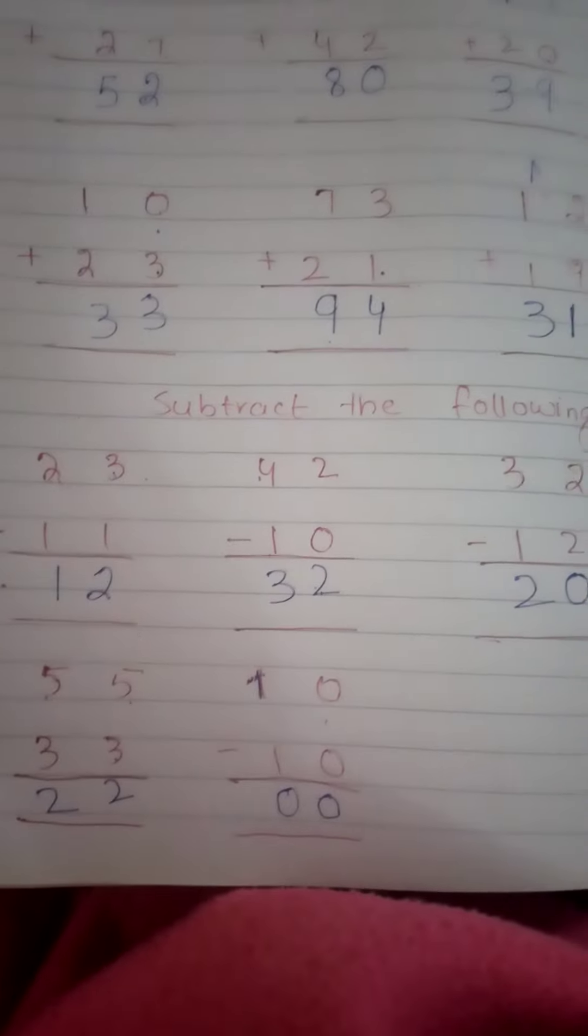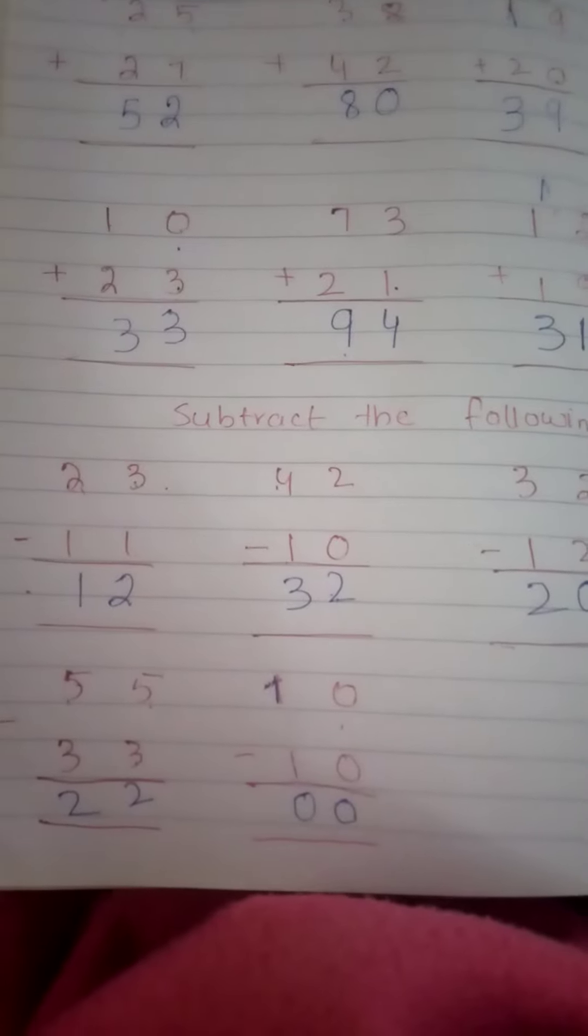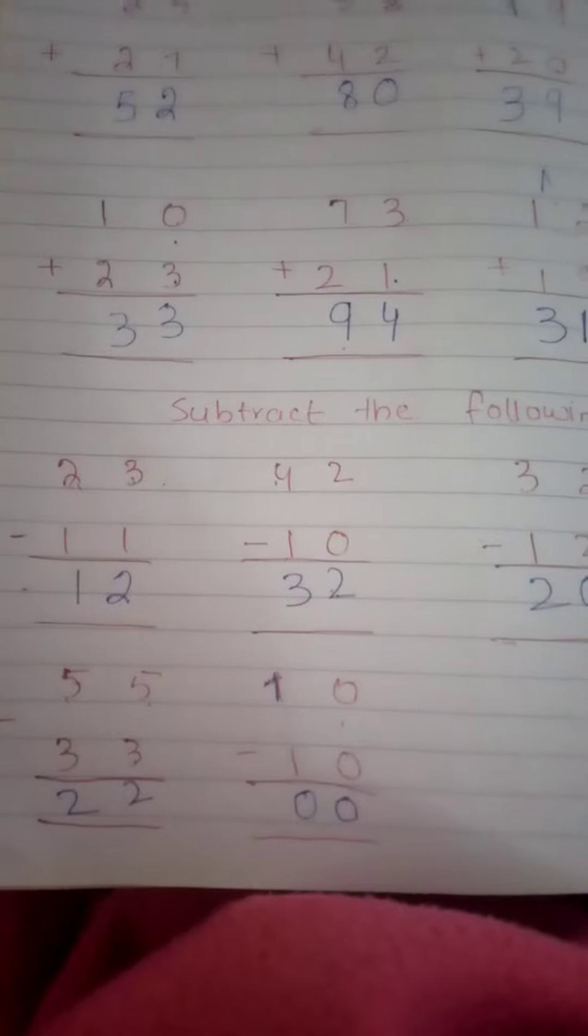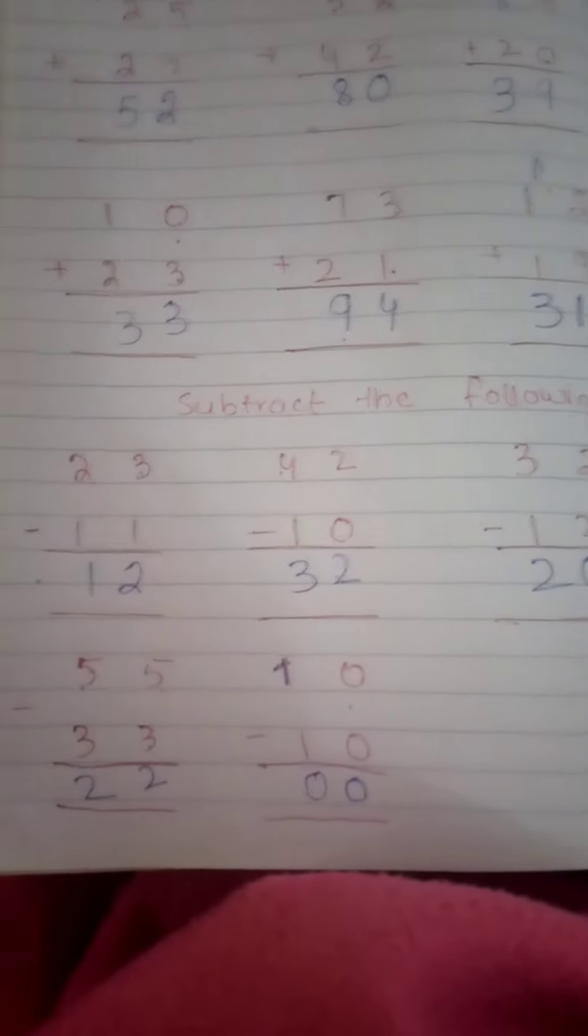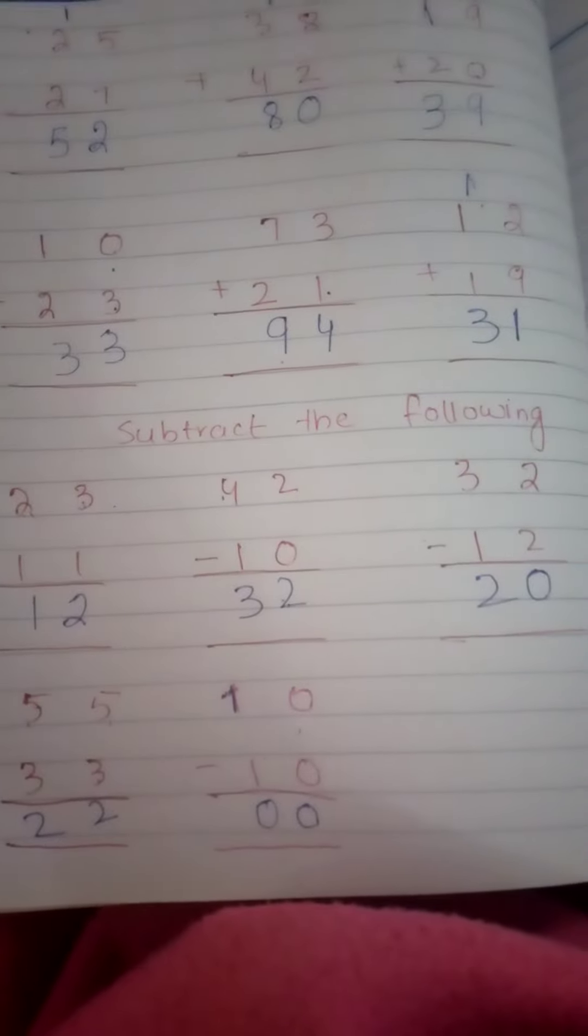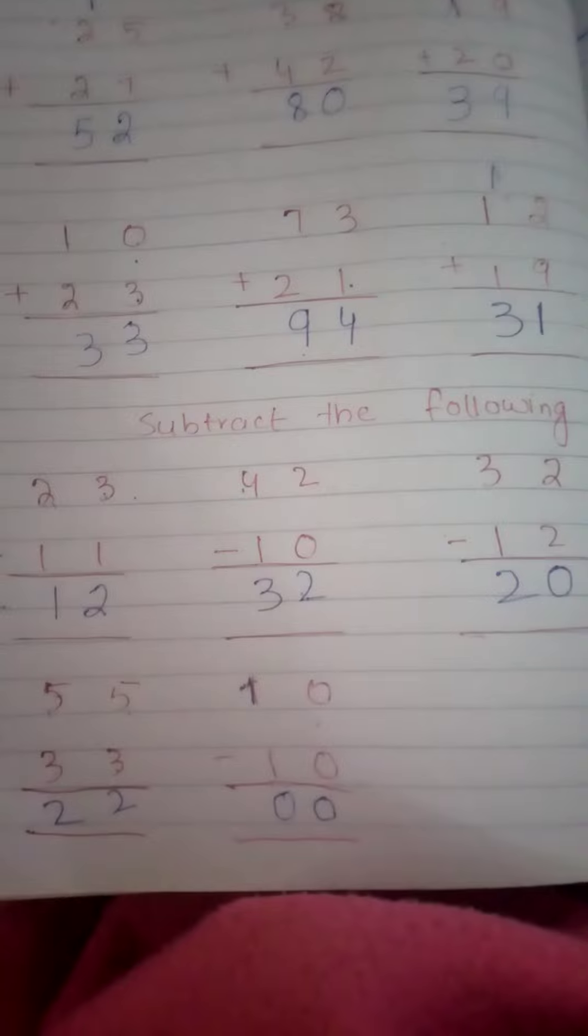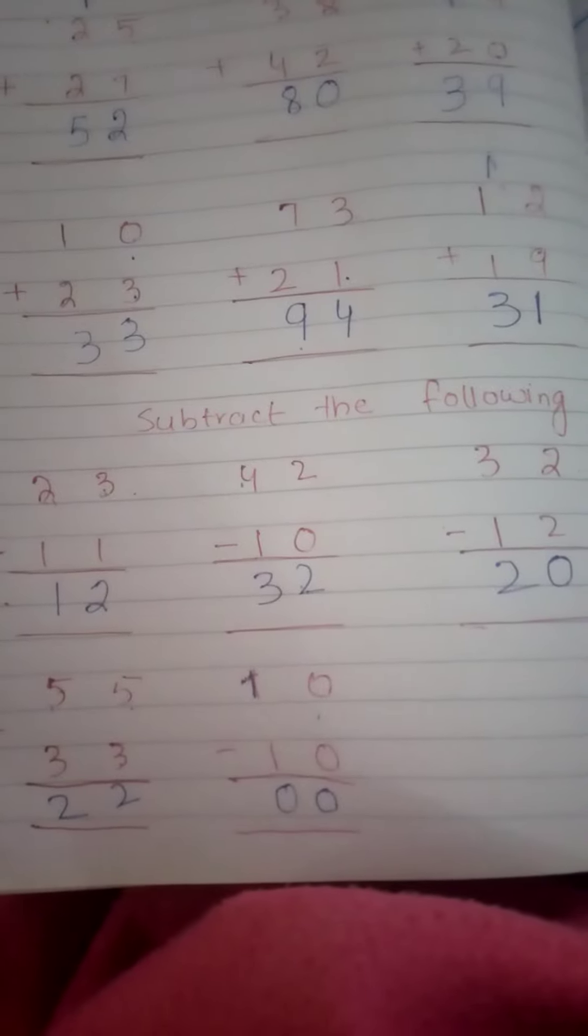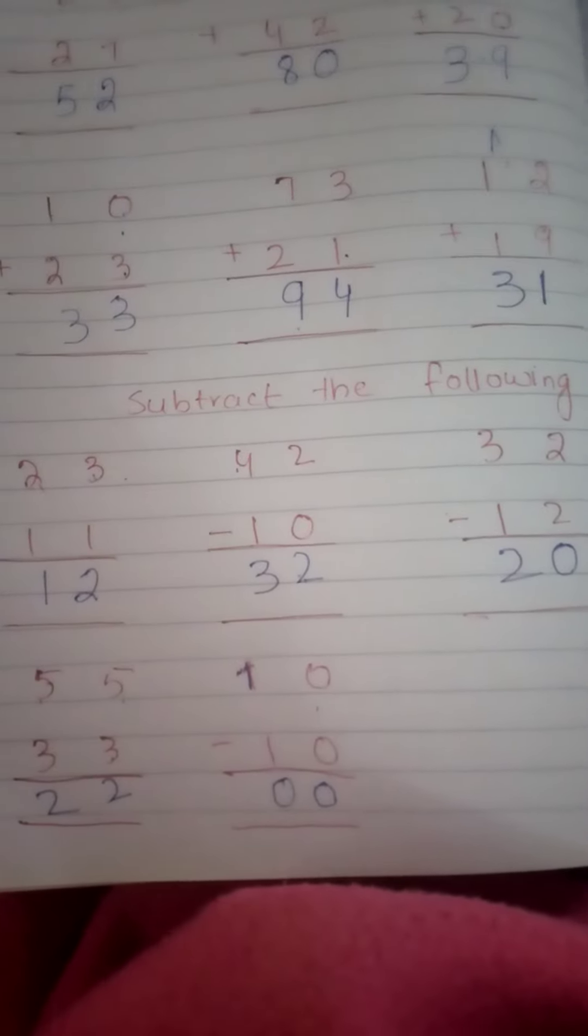Now subtract the following. 23 minus 11, answer is 12. 42 minus 10, answer is 32. 32 minus 12, answer is 20. 55 minus 33, answer is 22. 10 minus 10, answer is 0.